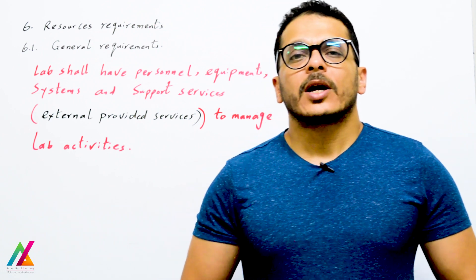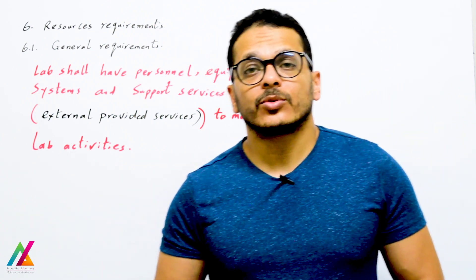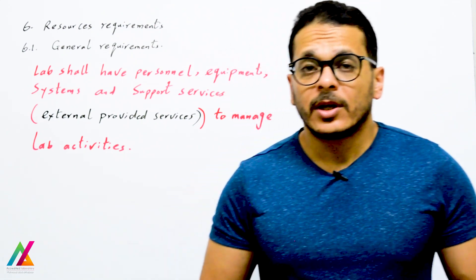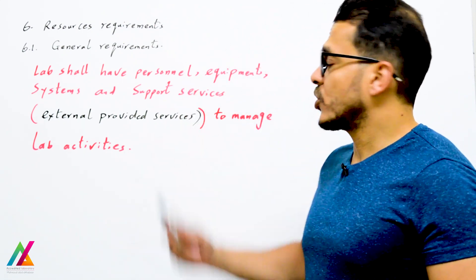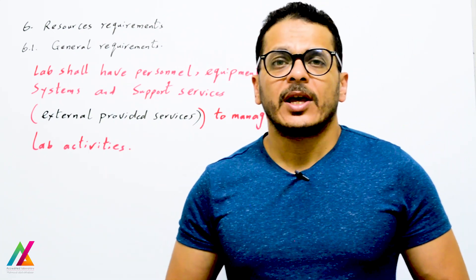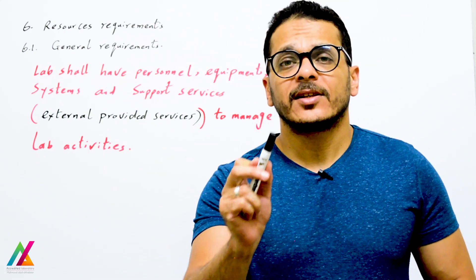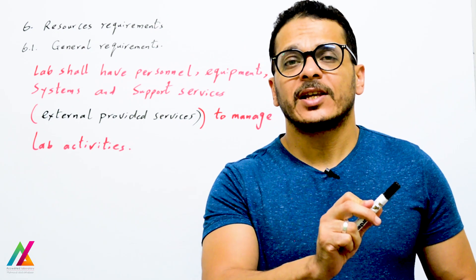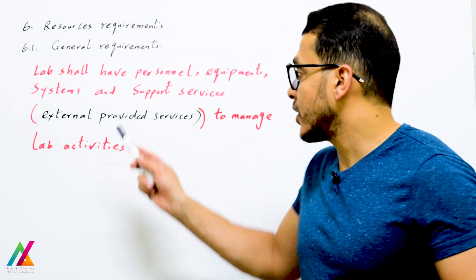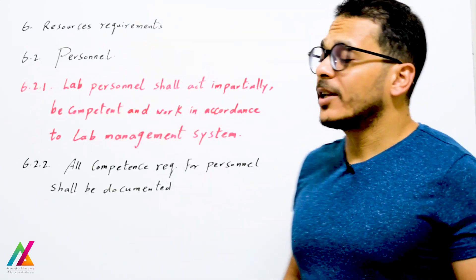Welcome back with a new lecture on ISO IEC 17025:2017 edition. Today we cover resources requirements. The first point is general requirements: the lab shall have personnel, equipment, systems, and support services, as well as externally provided services to manage lab activities and personnel.